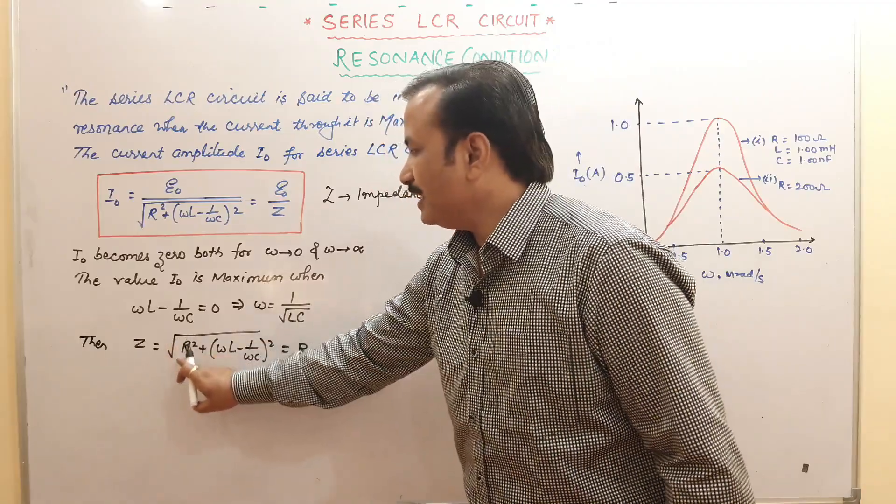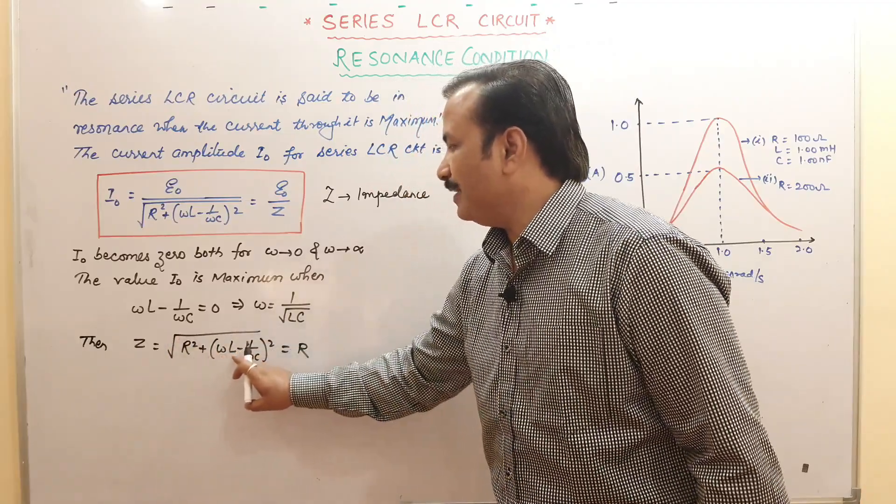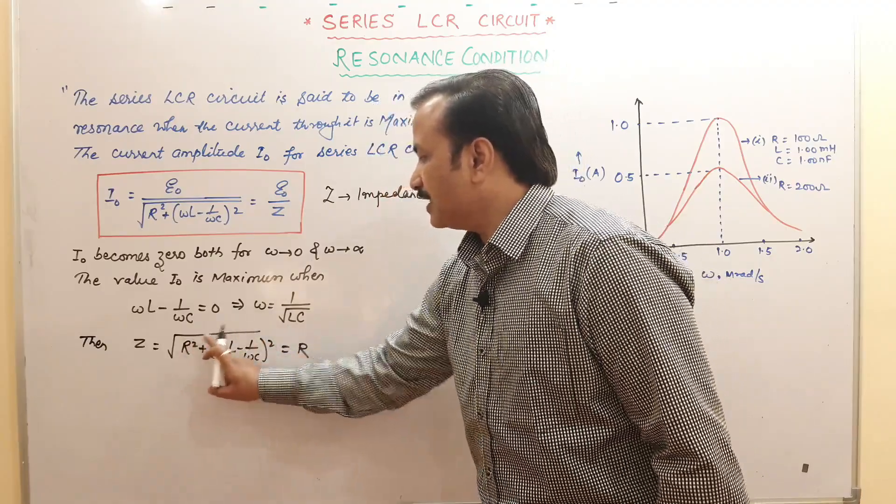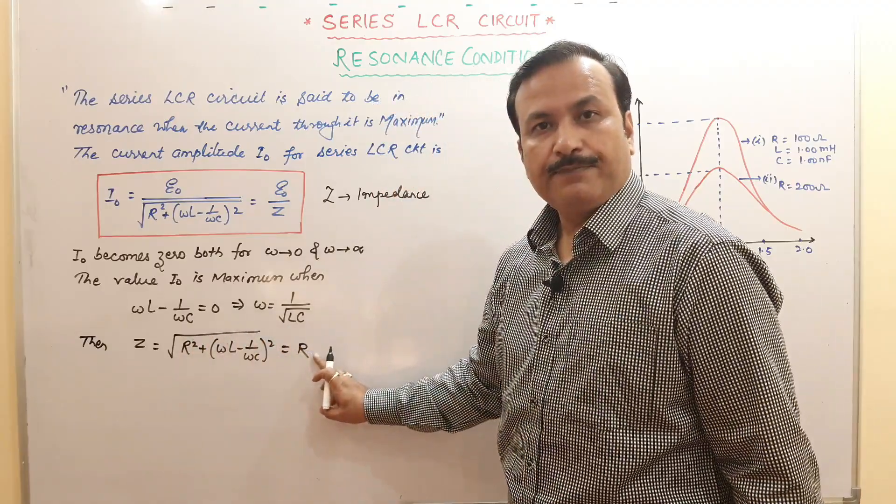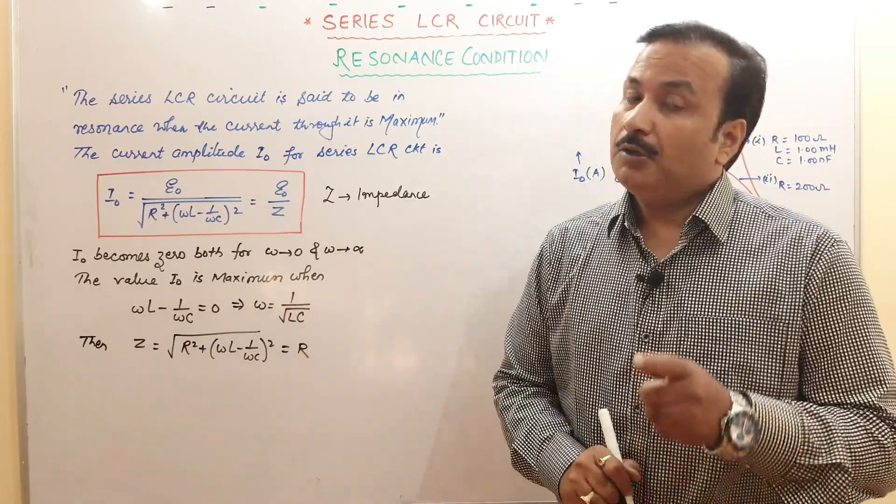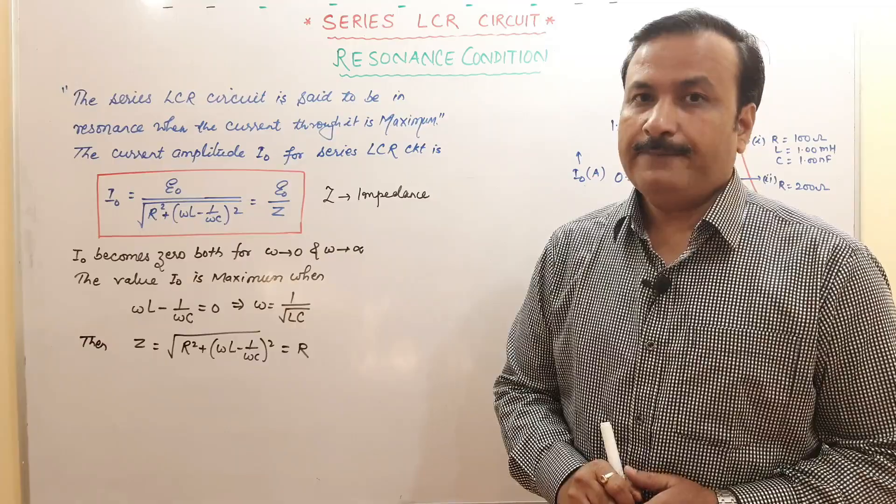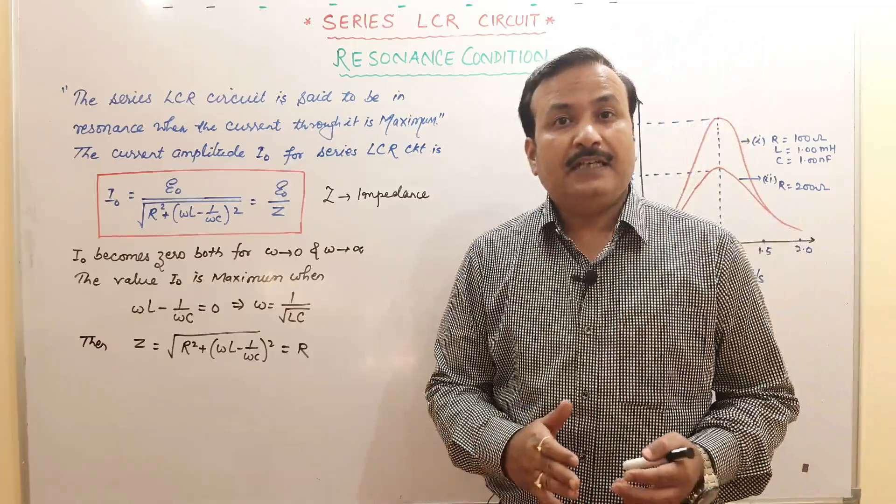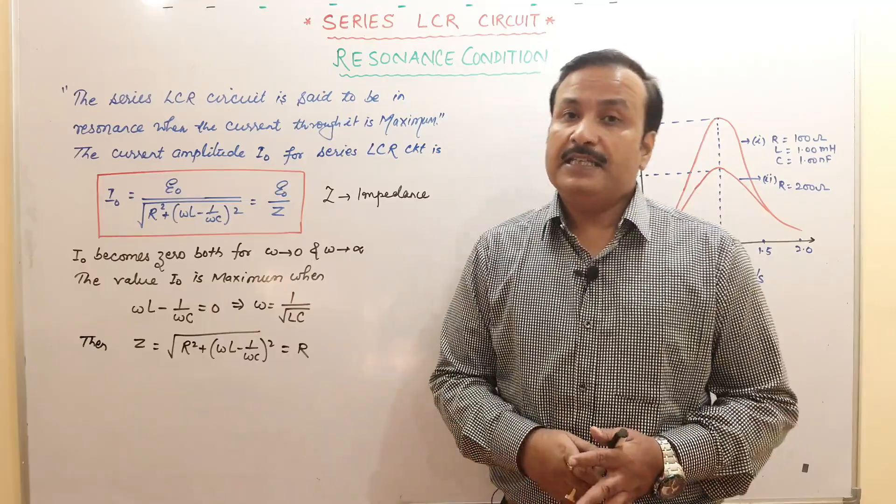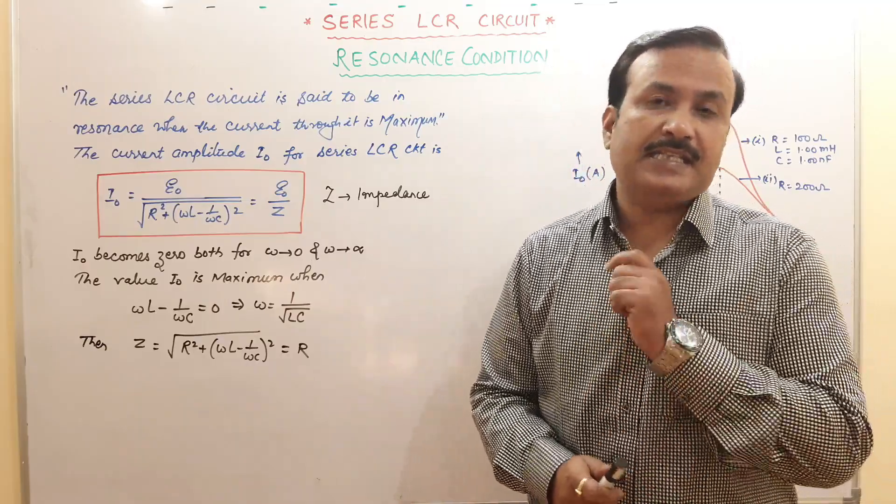What will be the value of z? R square plus omega l minus 1 upon omega c. We have made this zero. So this will give under root r square which is nothing but r. In this situation, current will be maximum, and you can see we are getting only r. That means here the circuit will be purely resistive circuit. Current and resistance will be in the same phase.